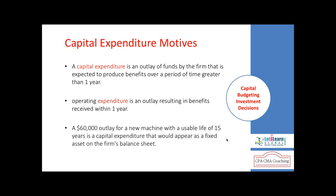When a benefit is received over a period greater than a year, the amount spent is called capital expenditure. For example, a company buying a truck, a delivery van, or a piece of land to construct a factory building — these are capex. A company buying printing stationery is operating expenditure because the benefit is received within less than a year.